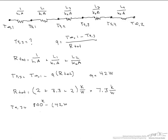TS3 equals 800 K minus 42 watts times 7.3 K over W, which equals 493.4 K. We can do this to find any one of the temperatures in our circuit by subtracting that temperature, which we want to find, from a known temperature and dividing that by the resistances between them, and setting it equal to Q.